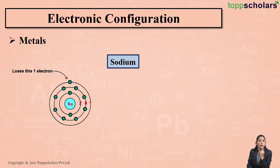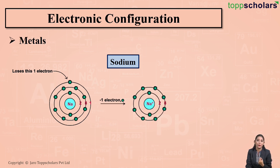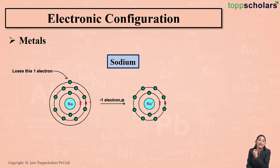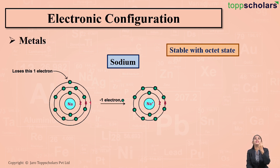There is one electron in the outermost shell of sodium. In order to become stable, sodium loses this one valence electron and forms a positively charged sodium cation (Na+). Now there are 8 electrons in the outermost shell, which means that sodium on losing one electron becomes stable with the octet state.